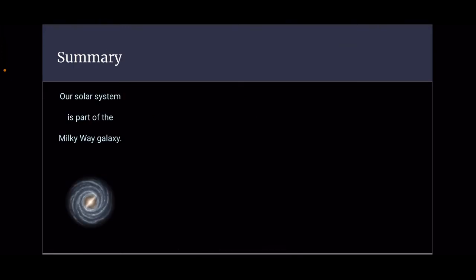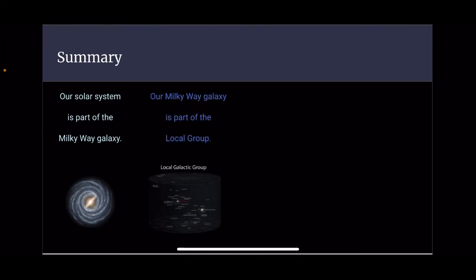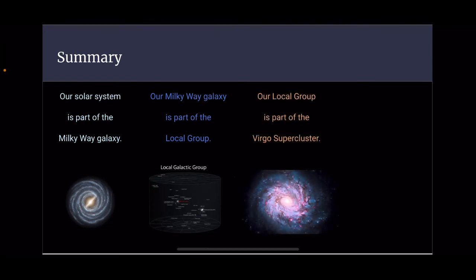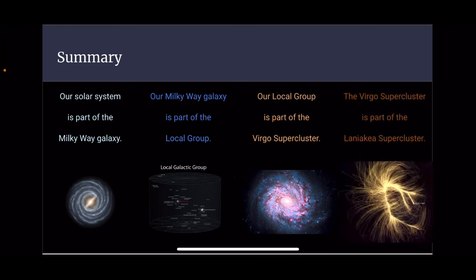So, in conclusion, our summary would be: our solar system is part of the Milky Way galaxy. Our Milky Way galaxy is part of the local group. Our local group is part of the Virgo supercluster. The Virgo supercluster is part of the Laniakia supercluster.